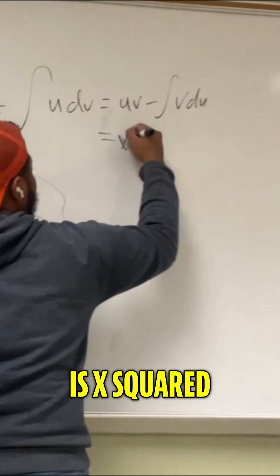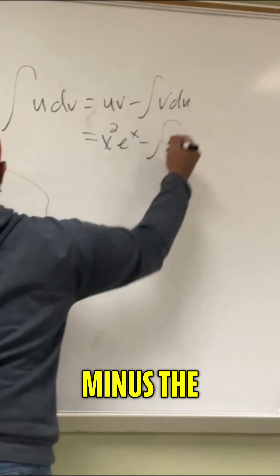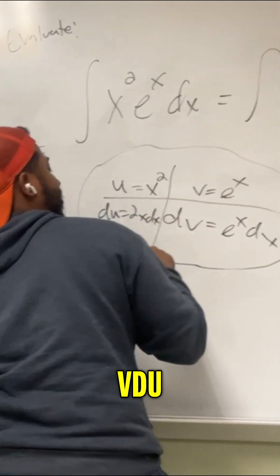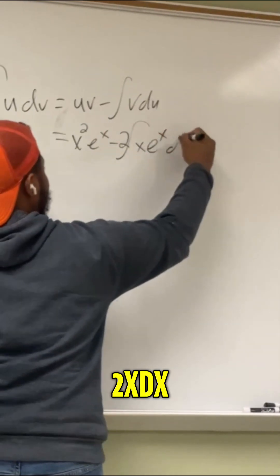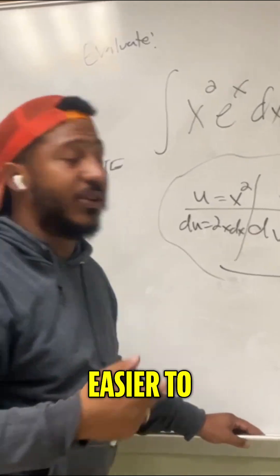So this becomes u times v, which is x squared times e to the x, minus the integral of v du, meaning e to the x times the 2x dx. And now hopefully this integrand is a lot easier to integrate, which it is.